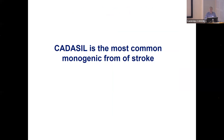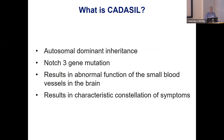CADASIL is by far the most common monogenic form of stroke. There are similar diseases — the next most common is called CADASIL 2 or HTRA1 — and we look after people with that disease in the clinic too; it presents in a very similar way, just caused by a different gene. CADASIL is autosomal dominant, and it's due to an abnormality in a gene called NOTCH3. It results in abnormal function of the small blood vessels in the brain. It causes changes in blood vessels throughout the body — which is why we used to do skin biopsies to diagnose it — but it actually only causes symptoms in the brain, resulting in a characteristic constellation of symptoms.